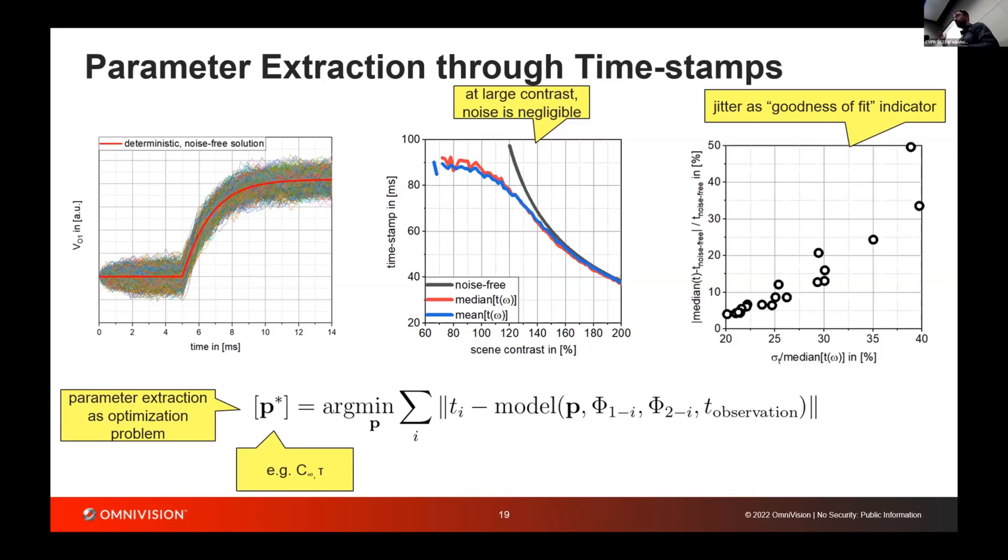Event probabilities, well, if you have a high contrast, the probability of firing is almost close to 1, so it's not really good as an indicator to sort out which events are useless for fitting. But the jitter is actually still a very good indicator, it turns out. We plot here normalized jitter to the median value, and you can see it linearly correlates almost, at least for high enough contrast, with the error between noise-free and noise-affected timestamps for difference.